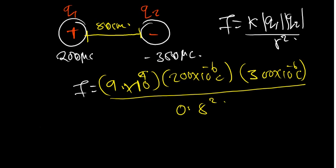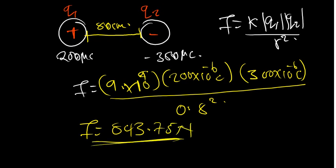Using the calculator: 9 × 10⁹ times 200 × 10⁻⁶ times 300 × 10⁻⁶ gives 540 on the numerator. Dividing by 0.8 squared gives 843.75. So the electric force is equal to 843.75 Newtons.